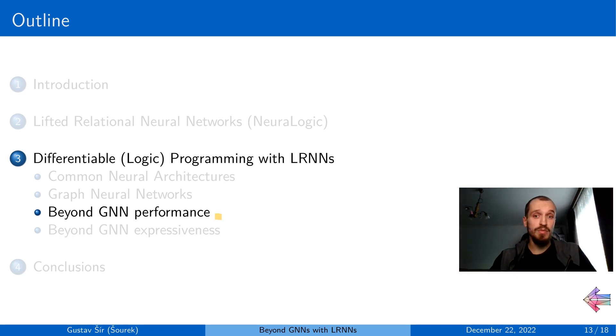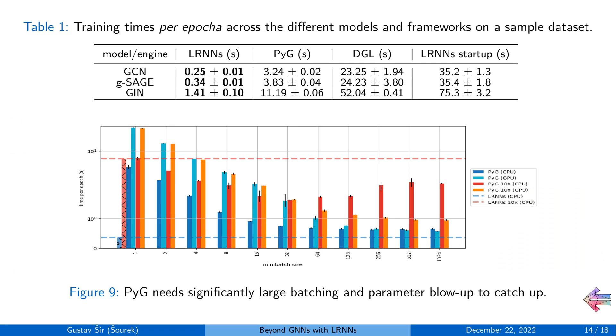So in the paper we demonstrated that while this declarative framework is more expressive than the standard procedural frameworks, allowing for encoding of much more complex models than the GNNs, it does not suffer from computational inefficiencies for these basic models either, as some might expect. On the contrary,